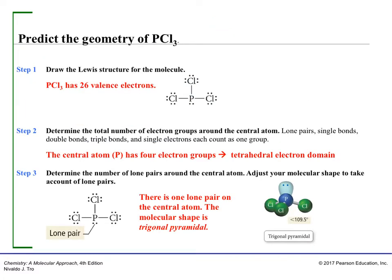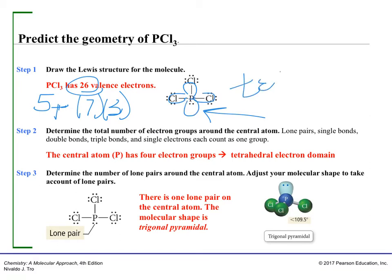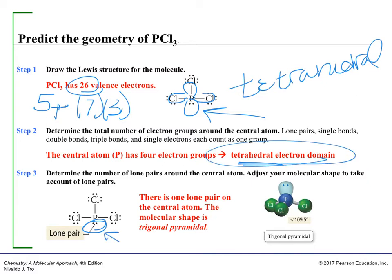Step by step: phosphorus trichloride has 26 valence electrons. Phosphorus has 5, and each chlorine has 7 — 7 times 3 is 21, plus 5 is 26. If you go through the steps of the Lewis structure, you end up with a Lewis dot structure with 4 areas of electron density around phosphorus: 1, 2, 3, 4. So its electron domain shape is tetrahedral. However, it has a lone pair of electrons on the central atom. So if you start with a tetrahedral electron domain and you have one lone pair, your molecular shape — when you ignore the lone pair — is trigonal pyramidal.